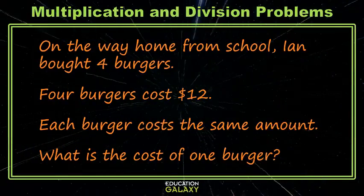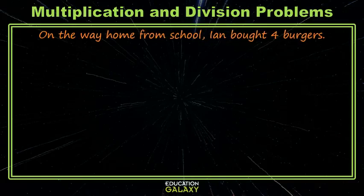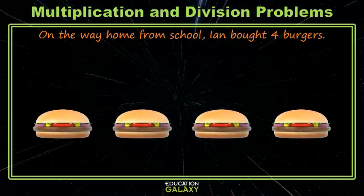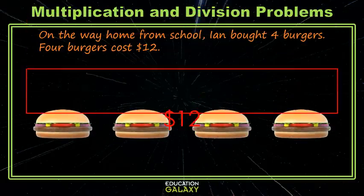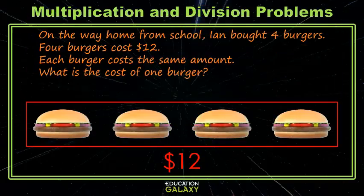On the way home this time, Ian bought four burgers and the burgers cost 12 dollars. Each burger costs the same amount and we want to know the cost of one burger. So same thing, we're just going to take this one piece at a time. On the way home from school, Ian bought four burgers. Let's give him four burgers and they cost 12 dollars — 12 dollars. And they cost the same amount. We want to know what is the cost of one burger?